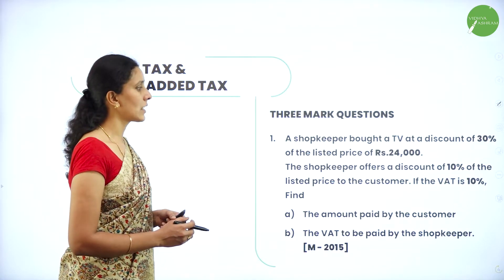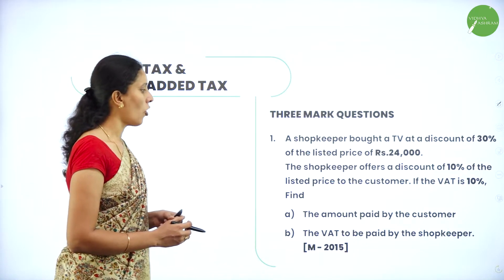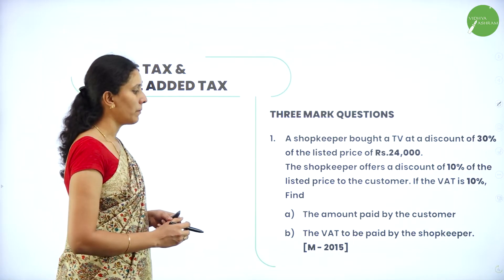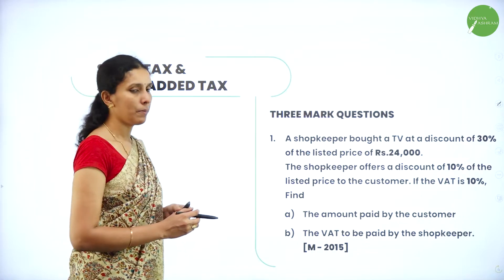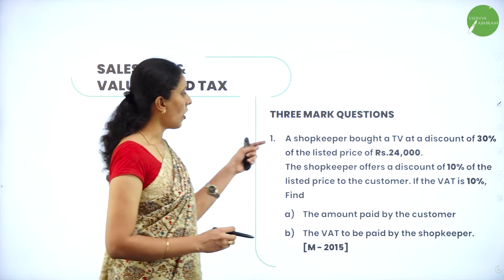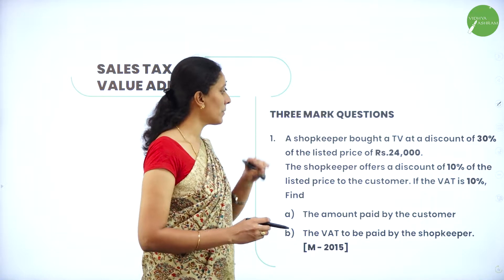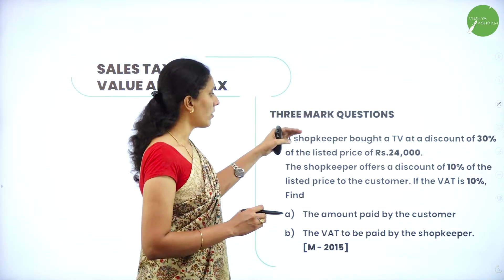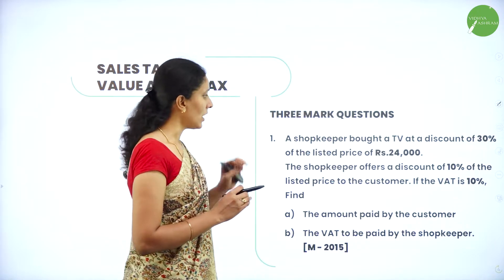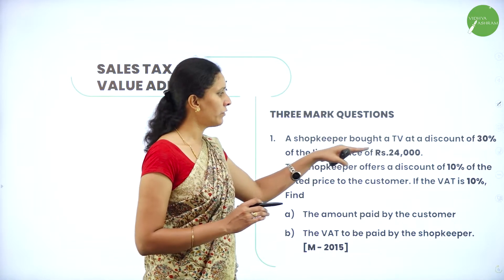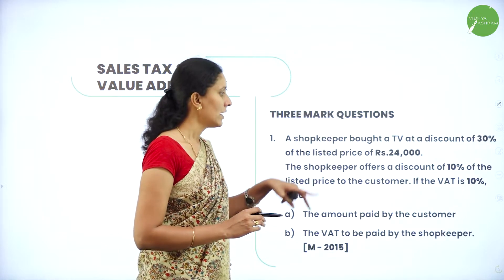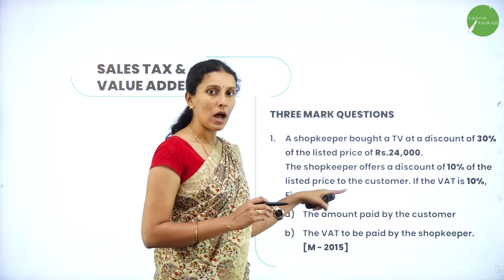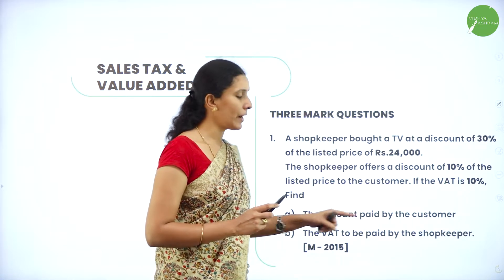The shopkeeper offers a discount of 10 percent of the listed price to the customer. If the VAT is 10 percent, find the amount paid by the customer and the VAT to be paid by the shopkeeper. The shopkeeper bought the TV at 30 percent discount of the listed price of 24,000. We need to find how much he paid for the TV and then the amount the customer pays.